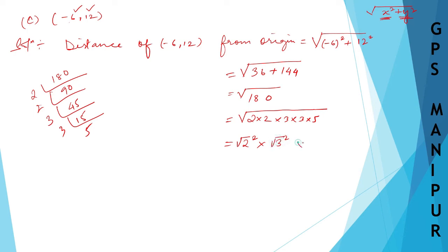And 5, it's alone, so only root 5. Square and root cancel, square and root cancel. 3 into 2 is 6, root 5. So 6√5.